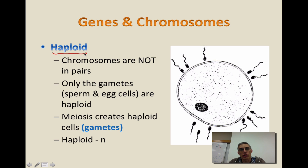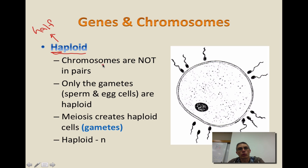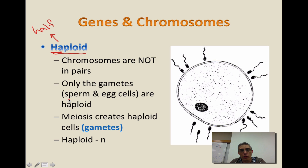This is an explanation of what it means to be a haploid cell. If you remember, we had the prefix DI which meant two. When you look at this prefix — HAP — it kind of implies that we have half. In this case, we're looking at the number of chromosomes found in this cell. We have chromosomes that are not found in pairs; we only have half the required amount of chromosomes. The only situation where a cell has only half the number of chromosomes would be either a sperm or an egg cell. These are the gametes, and all gametes are considered haploid — they only have half the chromosome number.